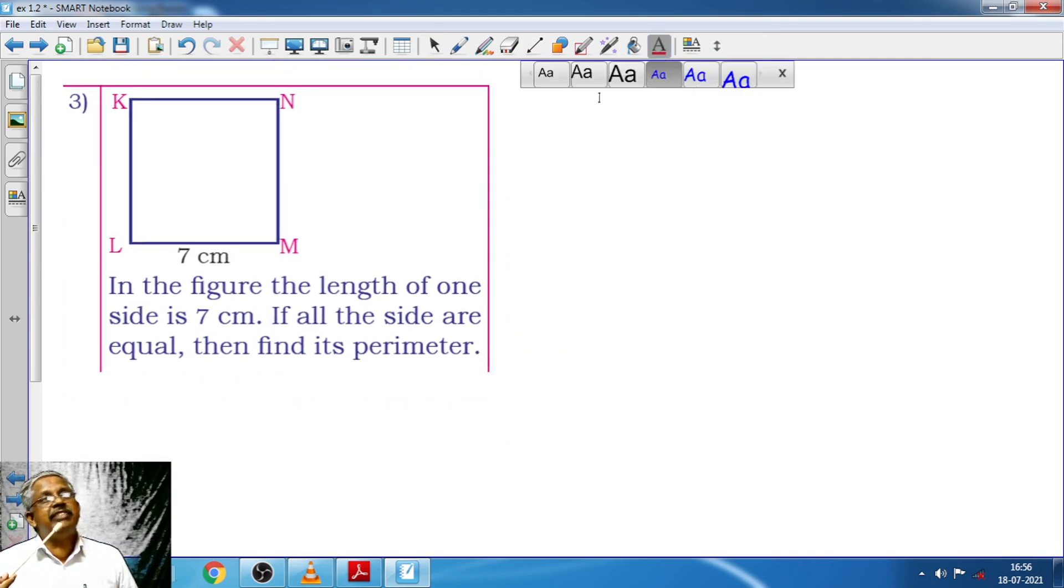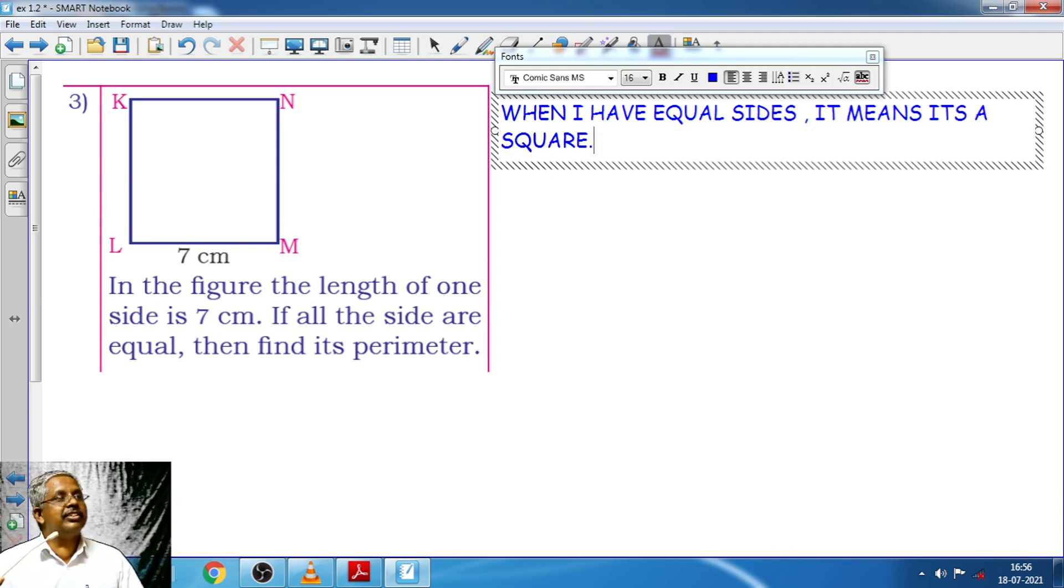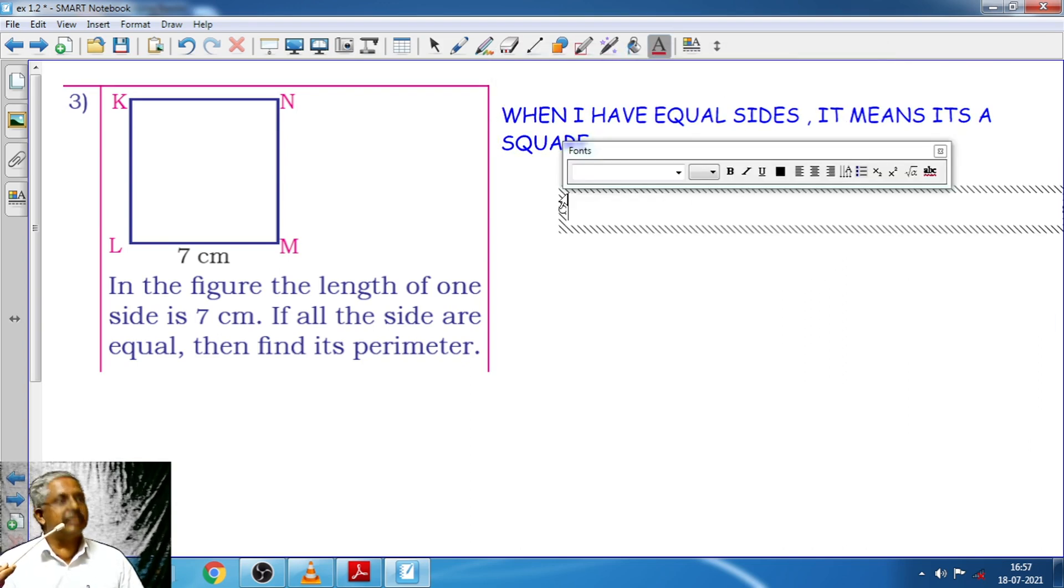When I have equal sides, what is that? When I have equal sides, it means it's a square. It's a square. Now, perimeter of a square.